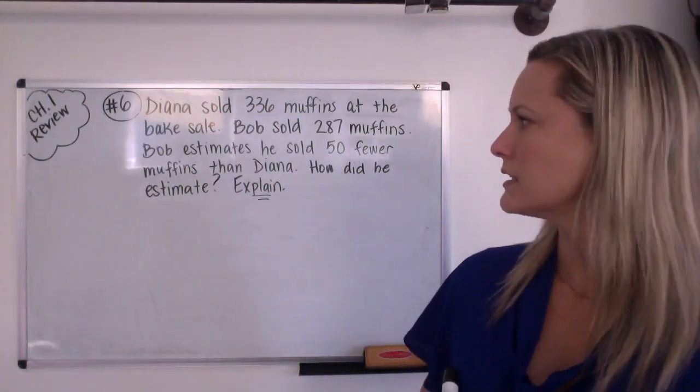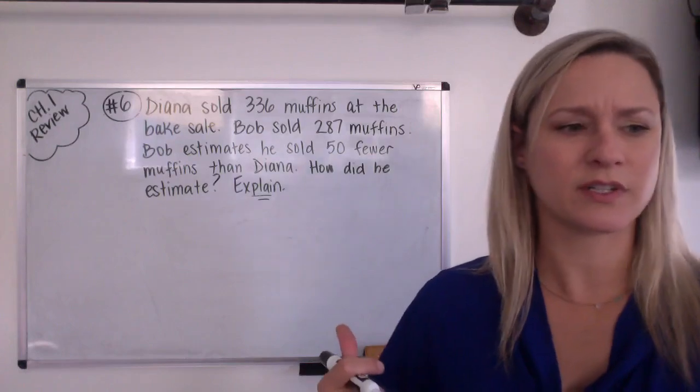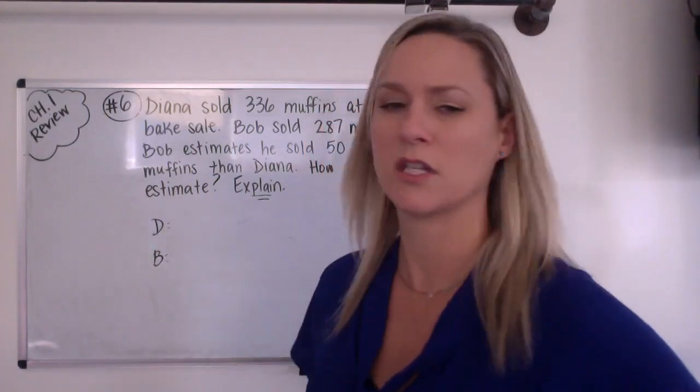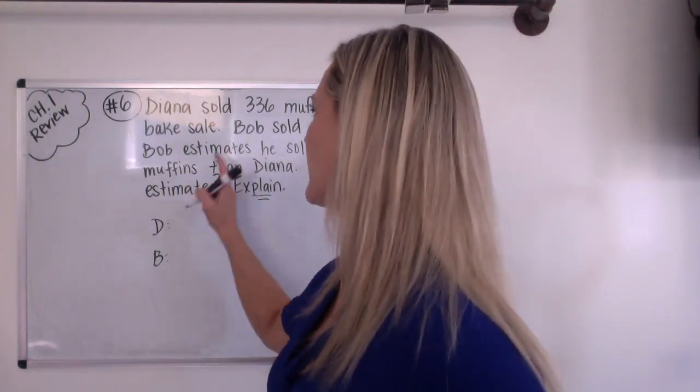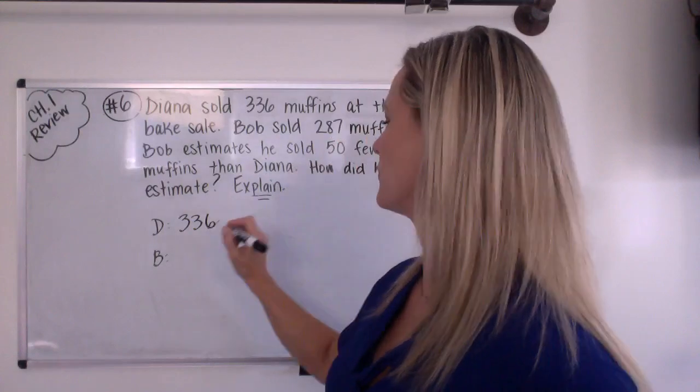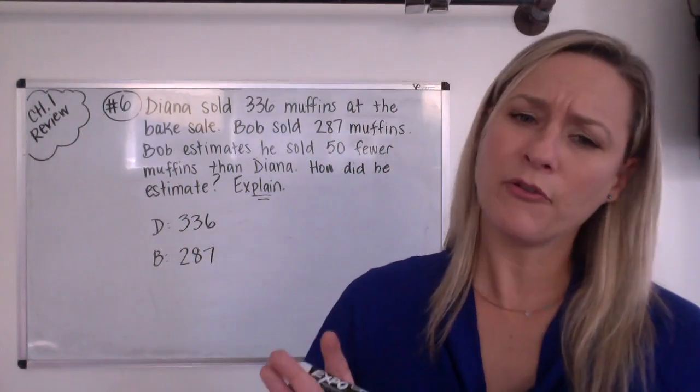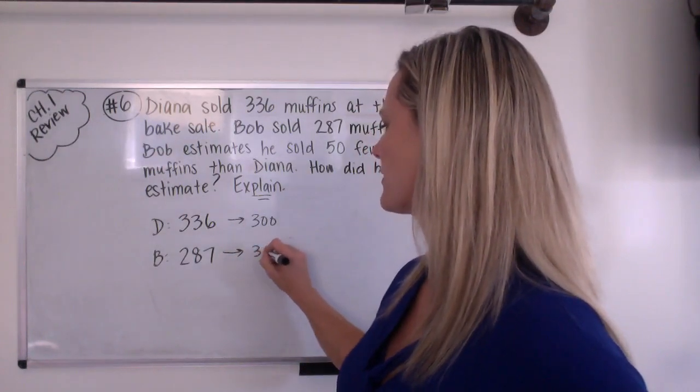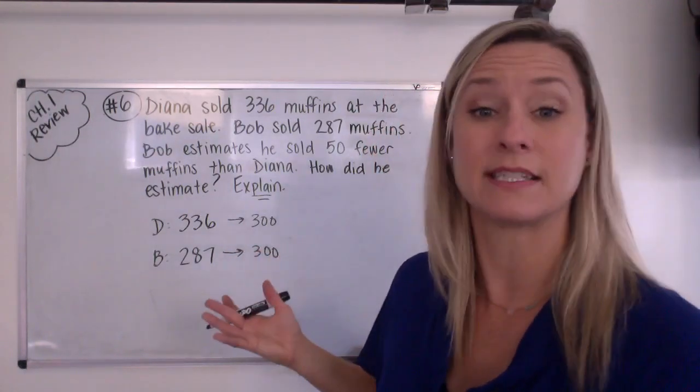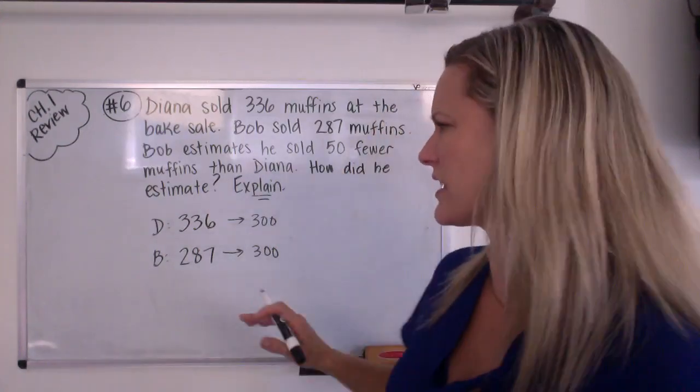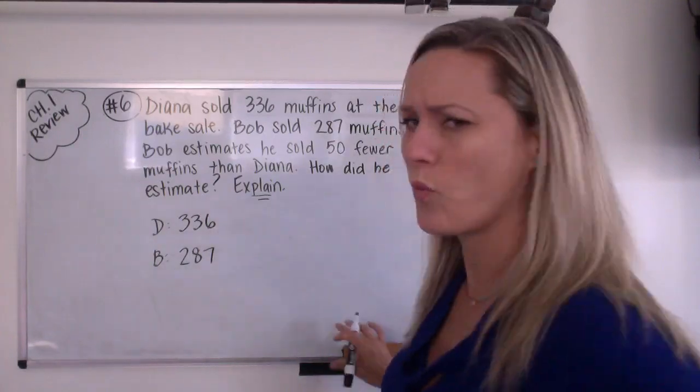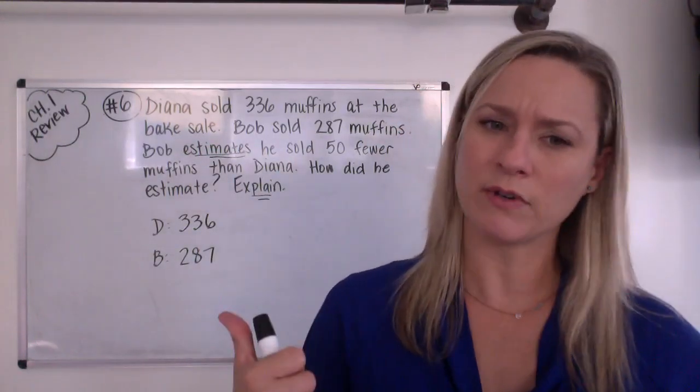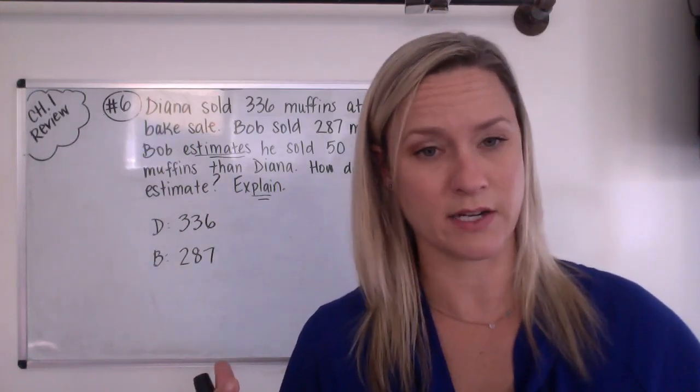Okay, so let's see. What did good old Bob do? He had 287 and she had 336. And we know, here's Diana. Here's Bob. I'm going to set those abbreviations out so we don't have to write their whole name. And Diana had 336 and Bob had 287 sold. Now, if we were rounding to the nearest hundred, Diana would round to 300 and Bob would round to 300. And then we'd have to say, well, they sold about the same amount. So that can't be it. So that's not what Bob did. So what do you think Bob did? He obviously rounded. It says Bob estimates he sold 50 fewer muffins. So we know he didn't round to the nearest hundred. Do you think he rounded to the nearest 10? Let's find out.